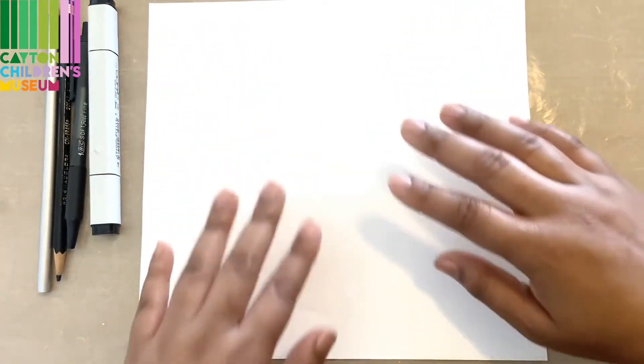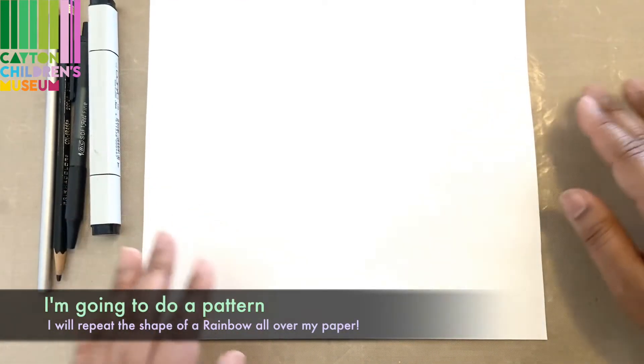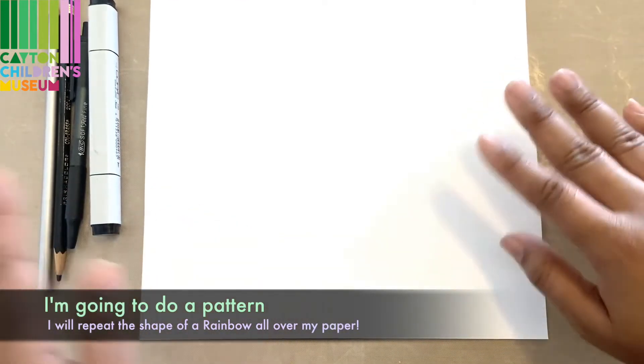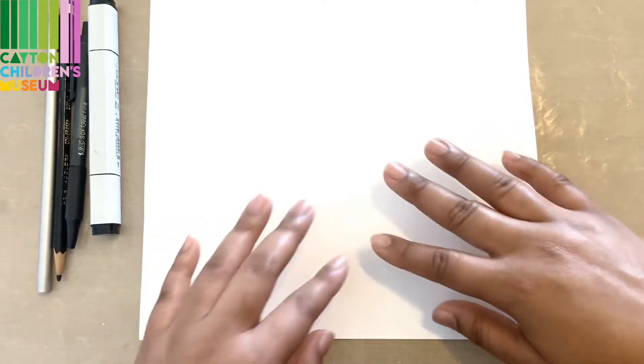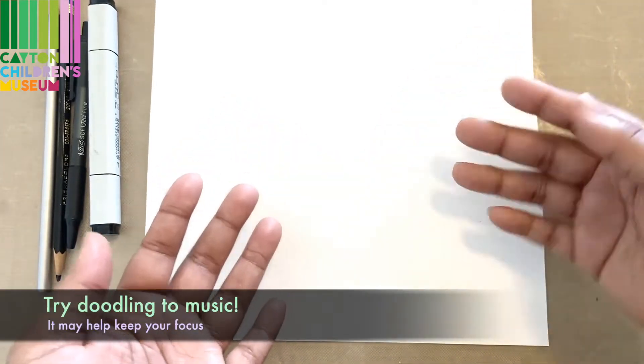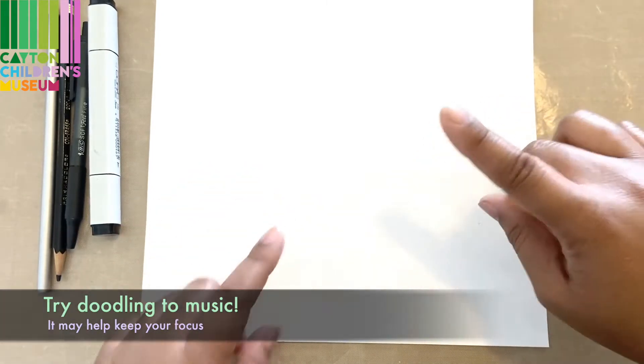I'm going to choose the shape of a rainbow because I really love rainbows. This will be like a black and white version of that. Another thing you can do is put on some music if you'd like. That way it helps keep you focused. Let's get started.